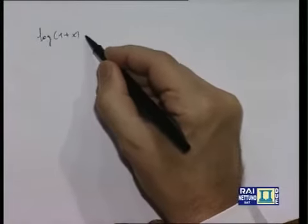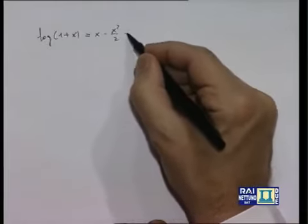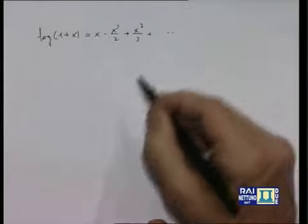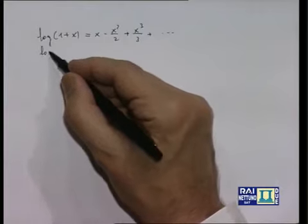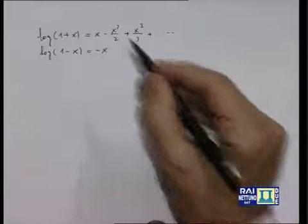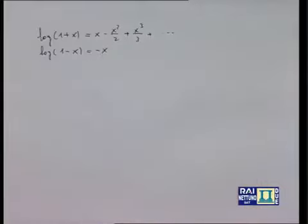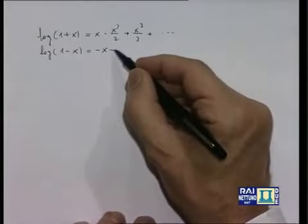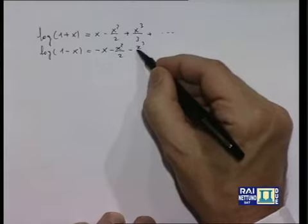Vorrei concludere indicando un possibile utilizzo della serie logaritmica per calcolare i logaritmi. La serie logaritmica è buona solo per x molto vicini a 0. Abbiamo trovato che log(1+x) = x - x²/2 + x³/3 - ···. Se al posto di x scriviamo -x, le potenze dispari cambiano segno, le pari restano, quindi log(1-x) = -x - x²/2 - x³/3 - ···.